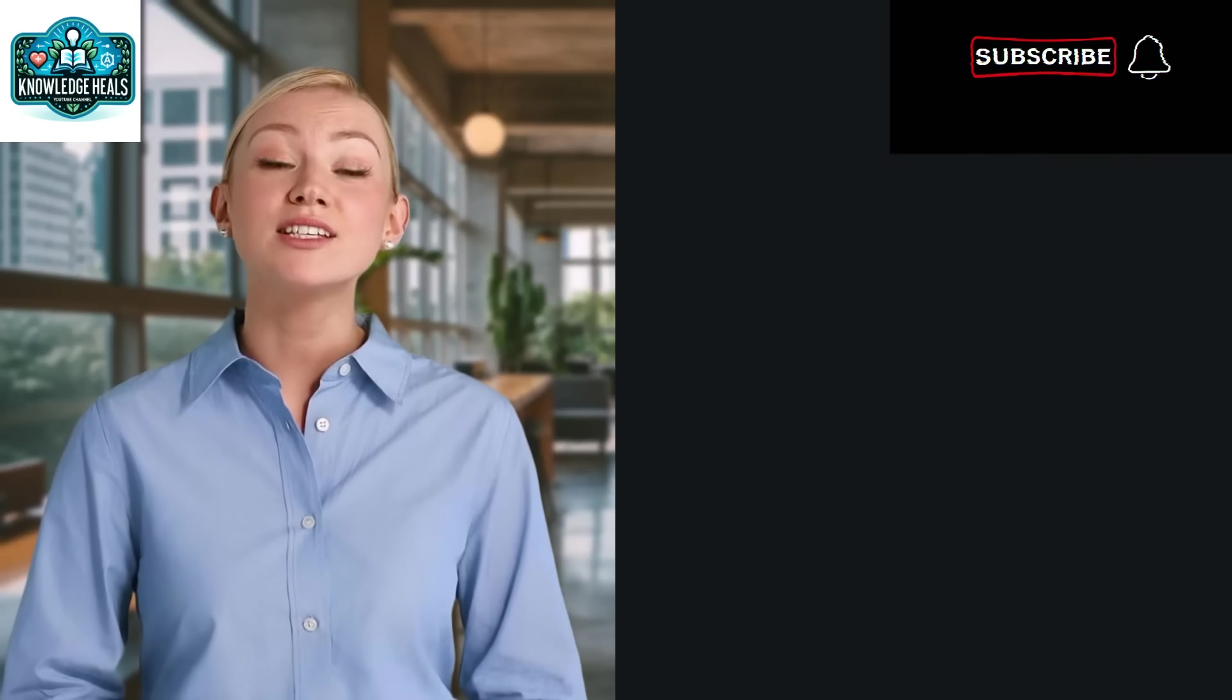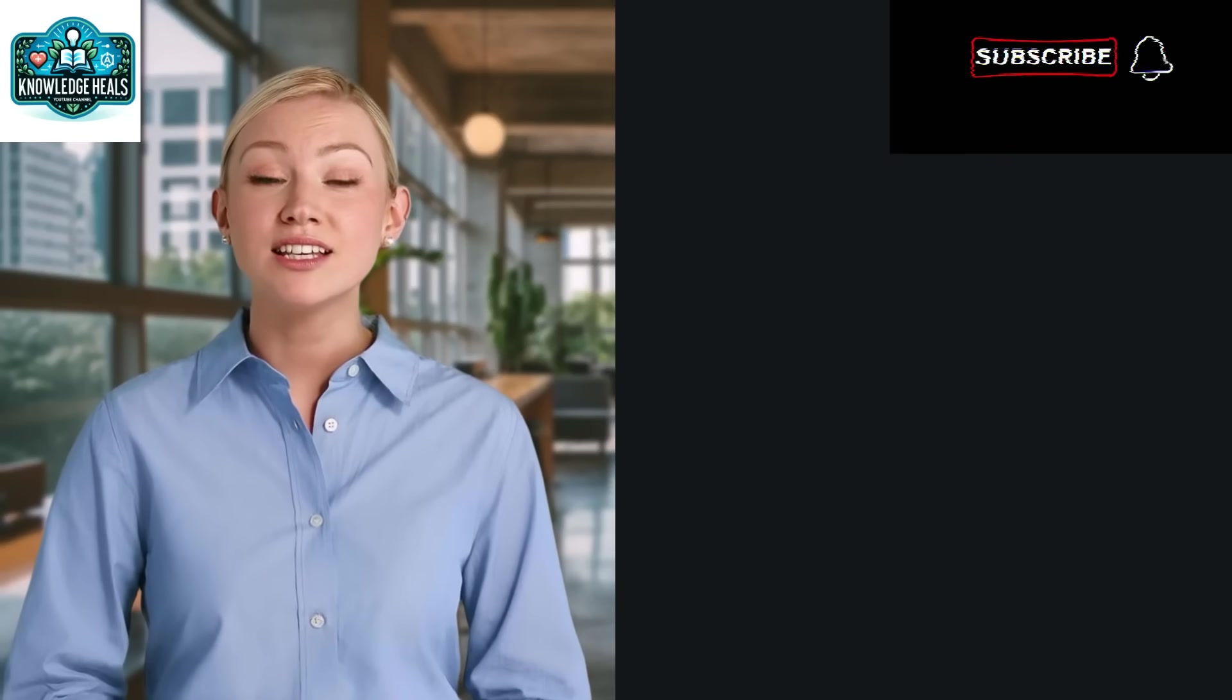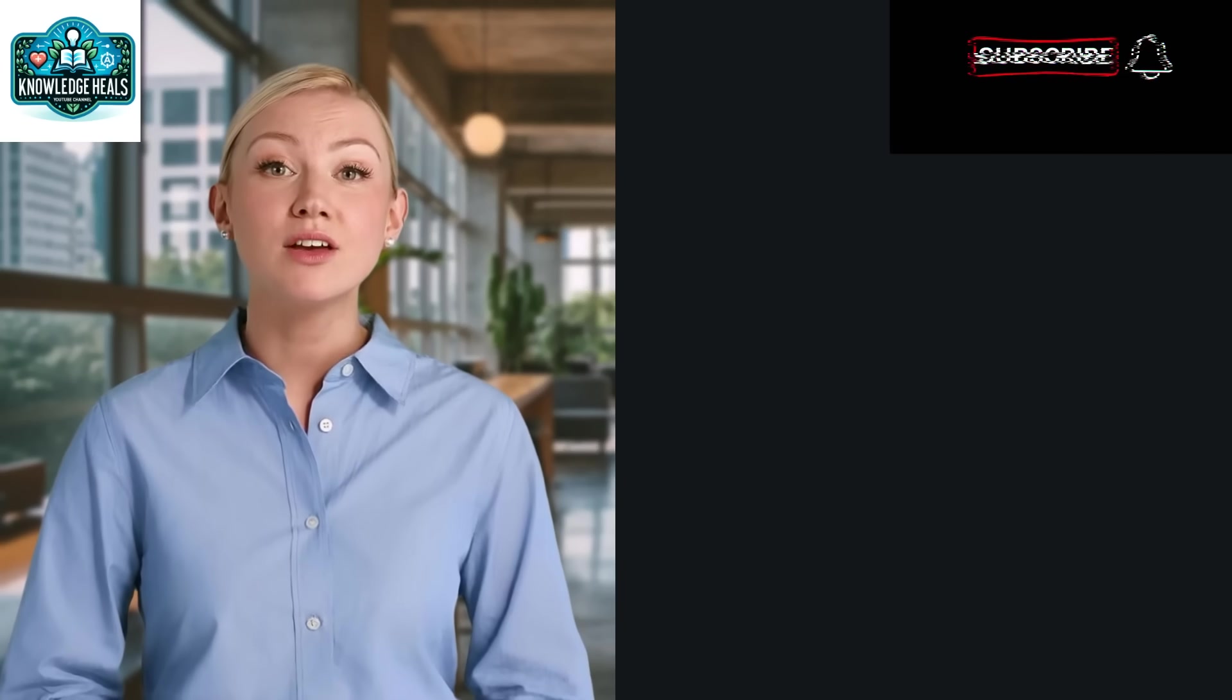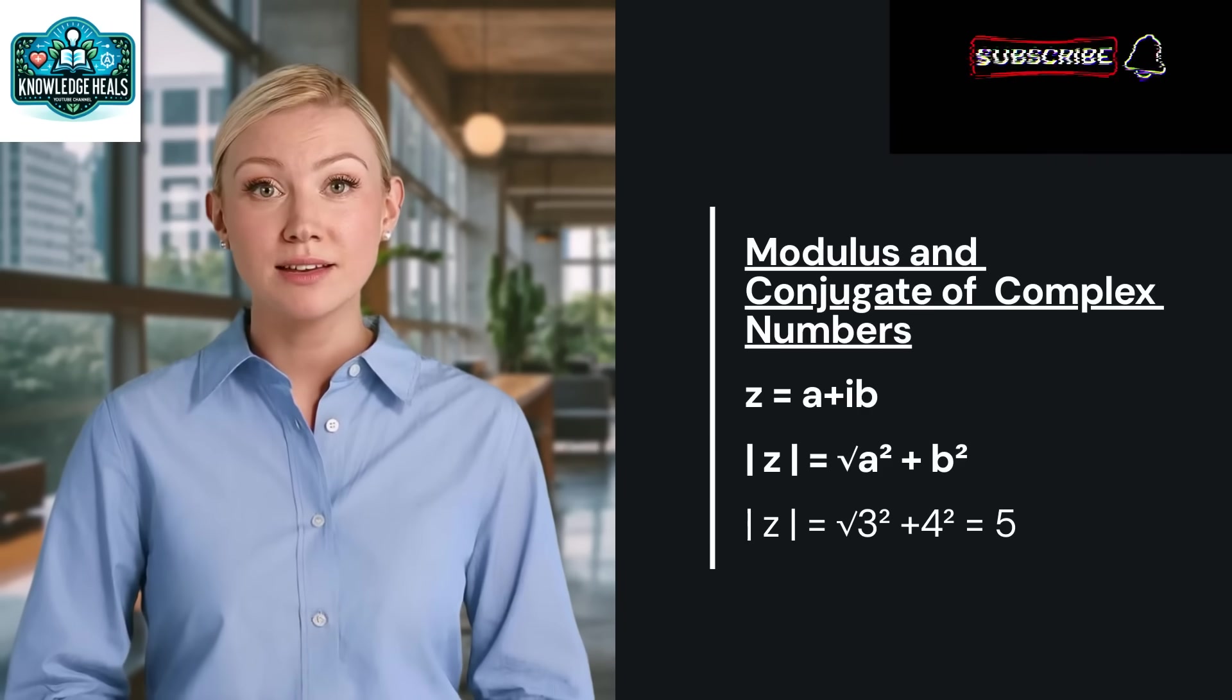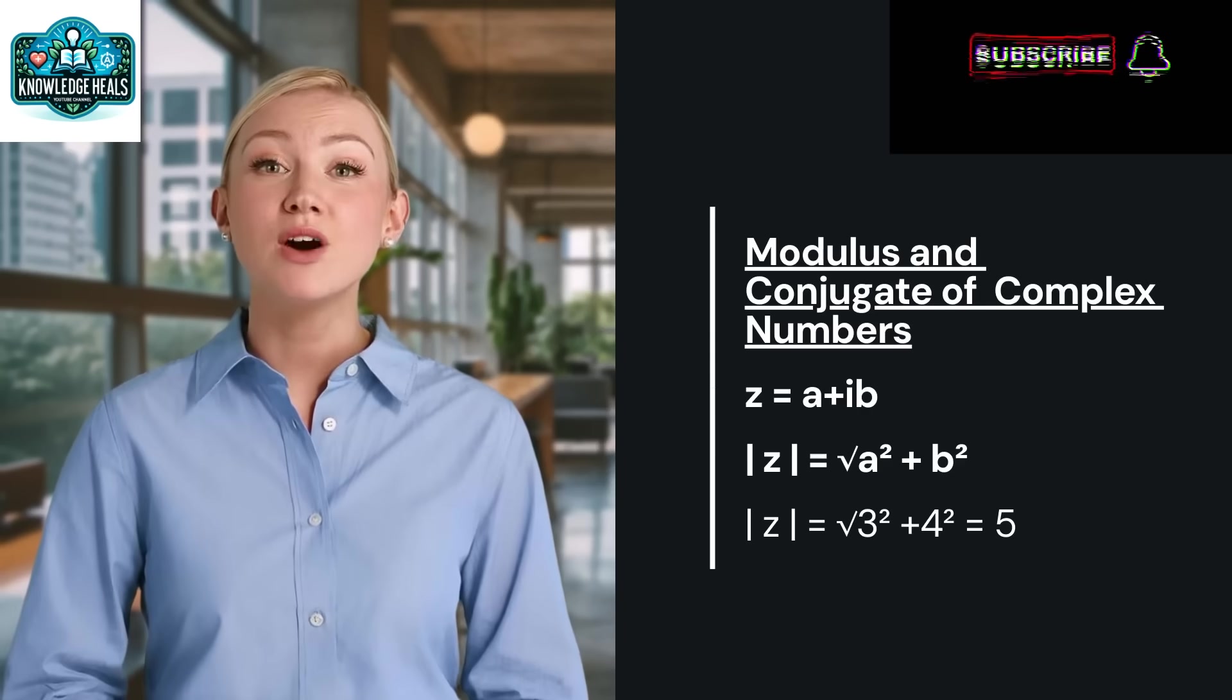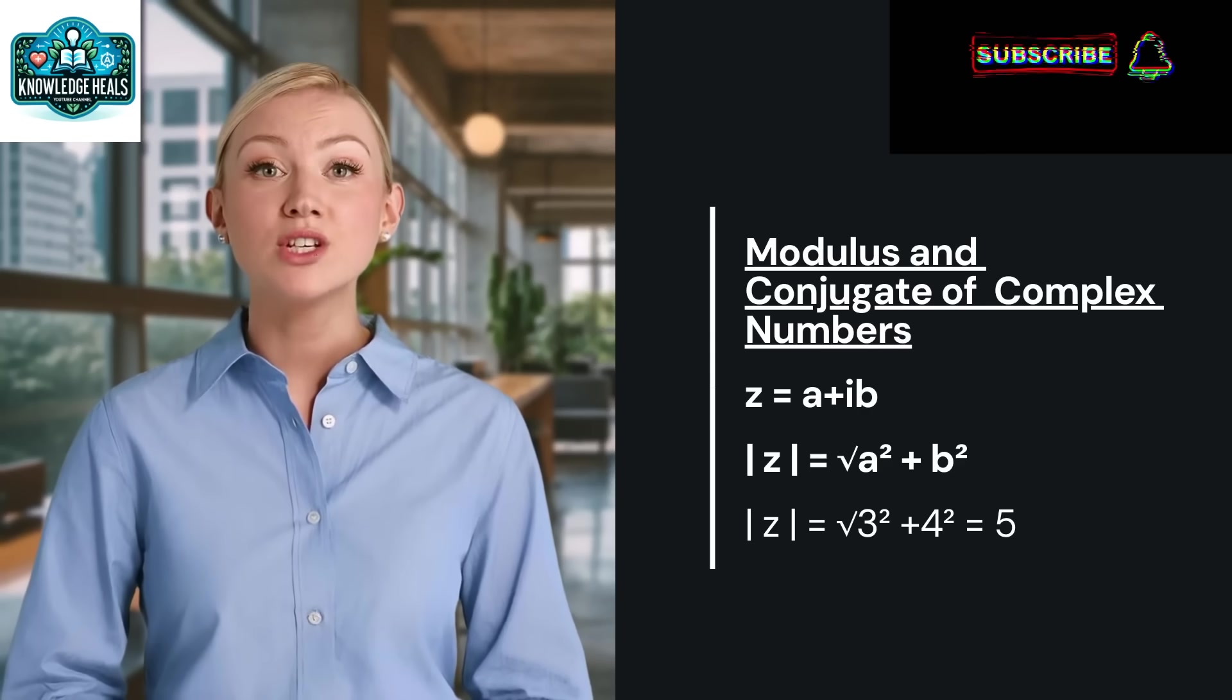Next, we have the modulus and conjugate of a complex number. The modulus of Z equal to a plus IB is given by modulus of Z equal to root of a square plus B square. It represents the distance of the complex number from the origin in the Argand plane. For Z equal to 3 plus 4I, the modulus is modulus of Z equal to root of 3 square plus 4 square, which is equal to 5.